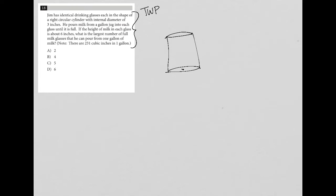The radius it tells me, or sorry, the diameter is three. So he pours and he has identical glasses. We don't know how many he has. So this is his drinking glass.